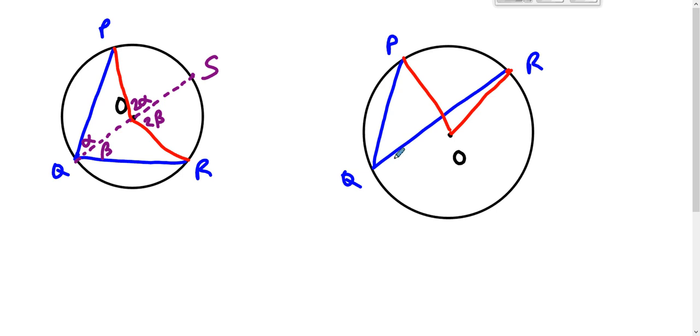Well again, we draw line QO, and we know that line QO has to intersect the circle again at S. And we know that whatever this angle measure is, this angle measure is twice as big. Whatever RQS is, ROS is twice as big.